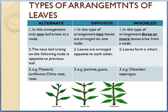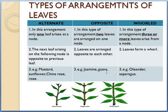The next type of arrangement is opposite arrangement. In this type of arrangement, two leaves are arranged on one node. From one node, two leaves arise — one in this direction and one in the other direction. Again from the second node, two leaves arise in the opposite direction. So in opposite arrangement, there are two leaves arranged on one node opposite to each other. Example of opposite arrangement: jasmine, guava leaf, etc.